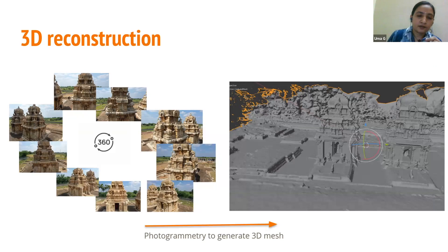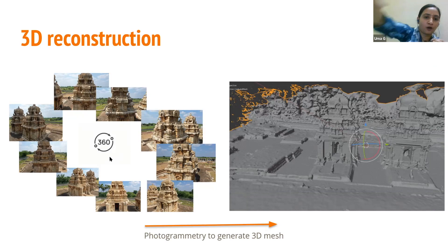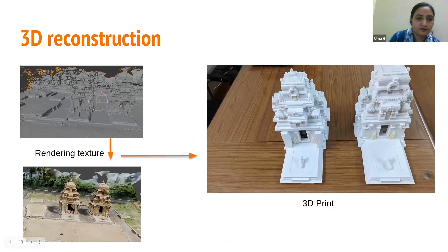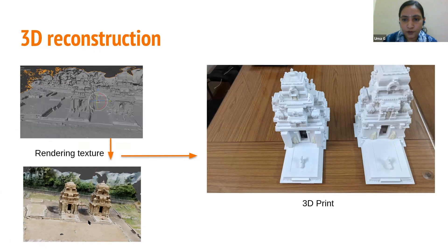There are many technical aspects involved. We have developed a prototype for this. One key technology is photogrammetry, where you create a 3D model of an existing object by photographing it from 360 degrees, taking snapshots from all directions. You then use those images to generate a mesh, as shown here, constructing a 3D model of the object. On top of that, you render texture — giving it the colors and appearance of the real object.